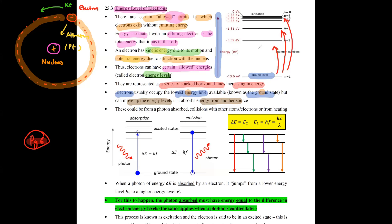When you want to absorb energy from a different source, it could be from a photon absorbed, it could be due to collisions with other atoms or electrons, or it could be from direct heating. However, for your chapter on quantum physics, you consider only the absorption of photons — you don't consider the other two cases.